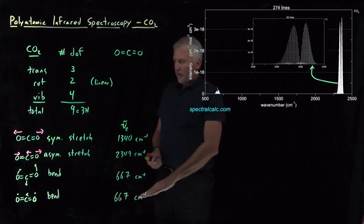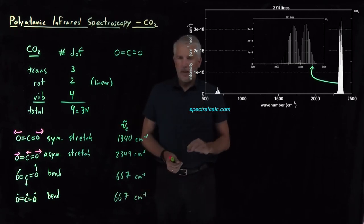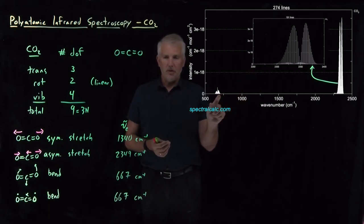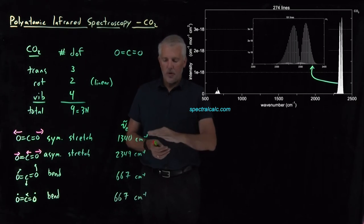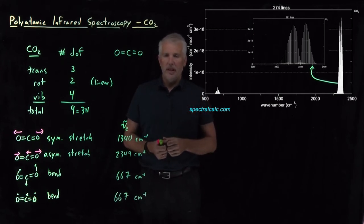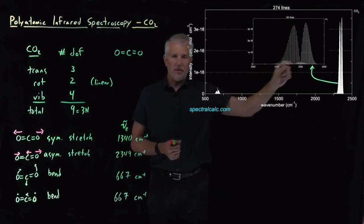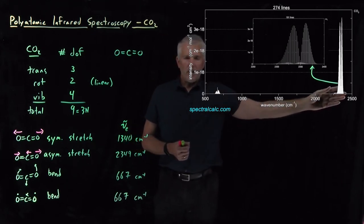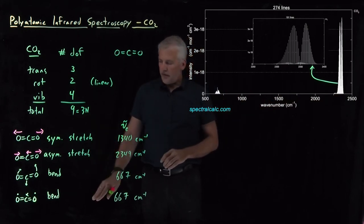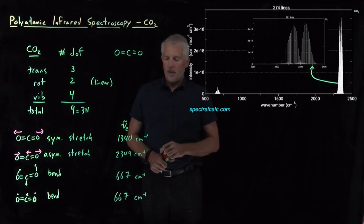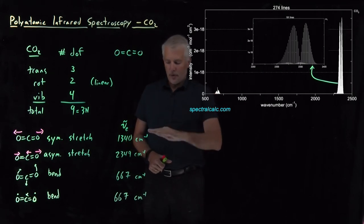Now that we know there are four vibrational frequencies, it makes sense that there are no new types of peaks in this ro-vibrational spectrum. There are still ro-vibrational peaks where the molecule changes one of these vibrations and either takes on some additional rotational energy or loses a little bit. The structure of these peaks is very familiar. But we might ask: why do we only see two of these bands? There are four different vibrational frequencies, so why do we not see four distinct ro-vibrational bands at four different frequencies?